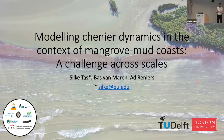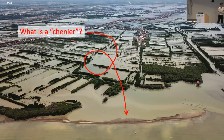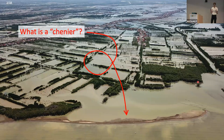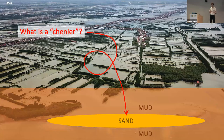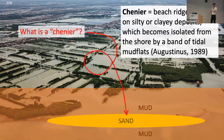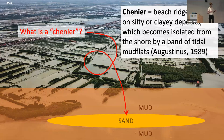I'll be talking about chenier dynamics. Maybe the most obvious question is: what is a chenier, depending on how you want to pronounce it. Basically, it's a sandy ridge found on muddy coastlines. There's this body of sand that's lying on top of and surrounded by mud. It can be sand, it can also be coarser particles, shells, but in this example it was sand.